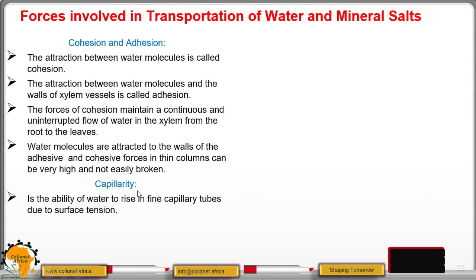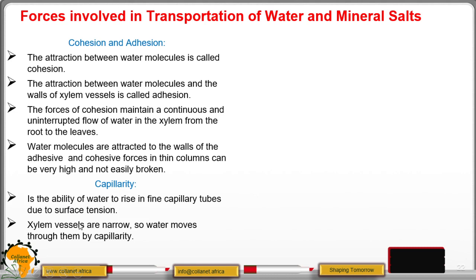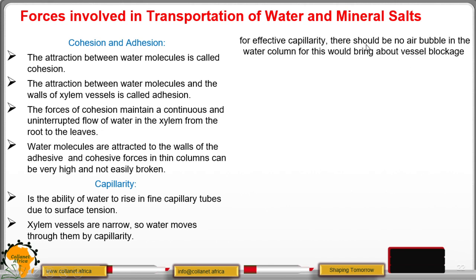Capillarity is the ability of water to rise in fine capillary tubes due to surface tension. Xylem vessels are narrow, so water moves through them by capillary action, which is higher in narrow tubes. Surface tension keeps water molecules together, forming a continuous and uninterrupted flow up the stem. For effective capillarity, there should be no air bubble in the water column, as this would cause vessel blockage.